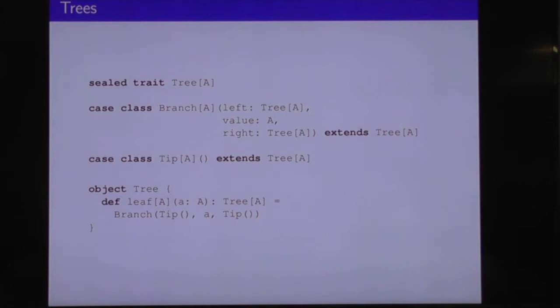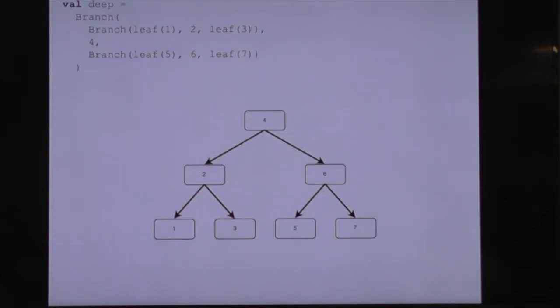We can now play around with this data type. We can make a tree called deep — here's the code that will create that tree, and here's a pretty picture of it. This tree happens to be in order and balanced, but that's not necessarily a property that holds for this type of tree. That's just so that the example is pretty.